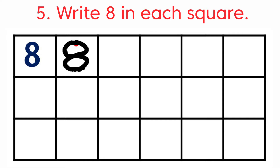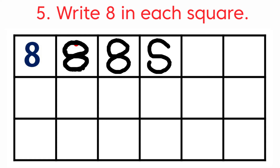Now we are going to write in the third square. First draw a forward curve, then facing downwards a backward curve, then facing up a forward curve, and then a backward curve at the top. This is how we write number 8. Now we are going to write 8 in the fourth square — a forward curve, then a backward curve, then a forward curve, then a backward curve. Now we got number 8. Then in the fifth square — a forward curve, a backward curve, a forward curve, and finally a backward curve.